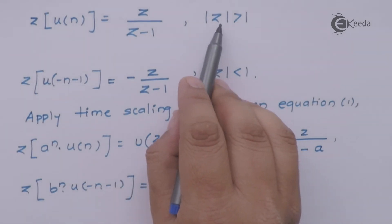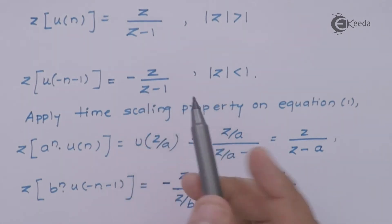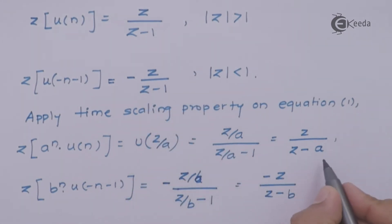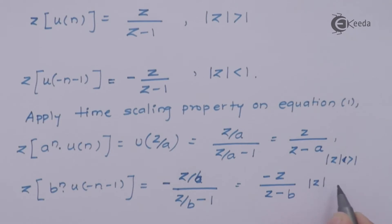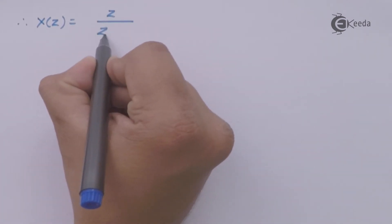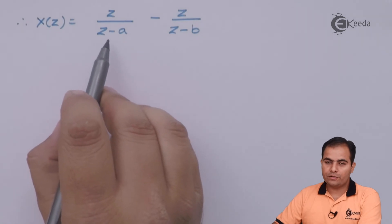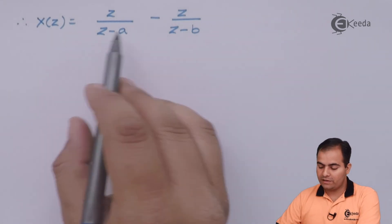For the first part, ROC is outside the unit circle (|Z| > A), and for the second part, ROC is inside the unit circle (|Z| < B). When we combine both parts, the ROC also combines. Substituting back into equation 1, X(Z) = Z/(Z-A) - Z/(Z-B), with ROC being the intersection: A < |Z| < B.